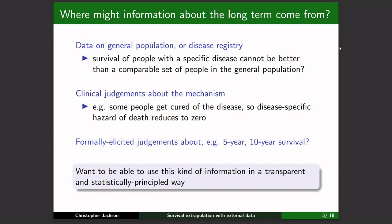External information might come from several sources: data on the general population on all-cause mortality, data from a registry of people with the disease you're studying, or expert judgments about long-term survival probabilities. You might also assume cure — people may be cured of a disease, so the hazard of death reduces to zero at some point. We want to use this information in a way that is transparent and statistically principled.